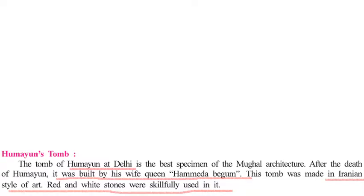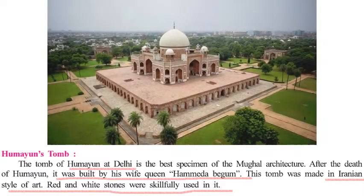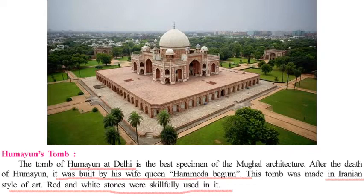Humayun's Tomb in Delhi is the best specimen of Mughal architecture. After the death of Humayun, it was built by his wife, Queen Hamida Banu Begum. This tomb has been created in the Iranian style of art, using red and white stones, as seen in the picture.